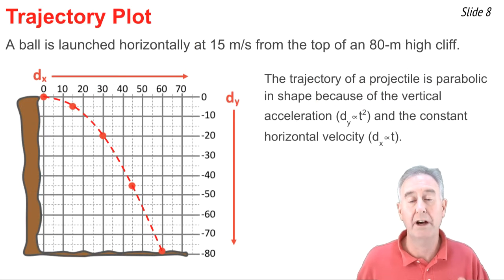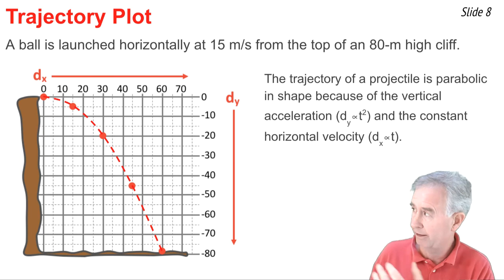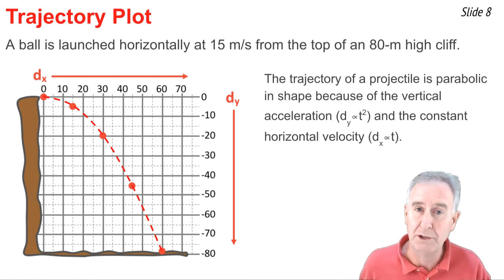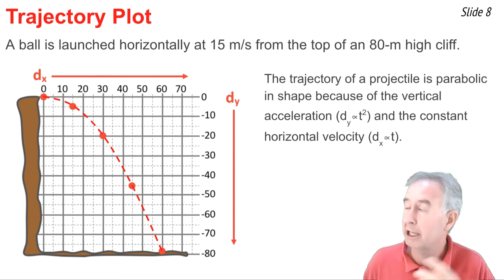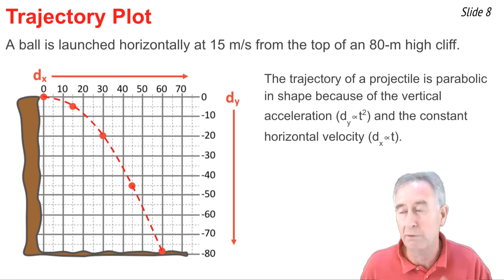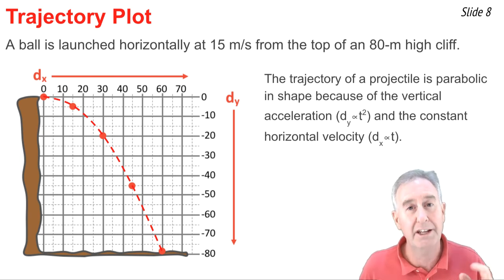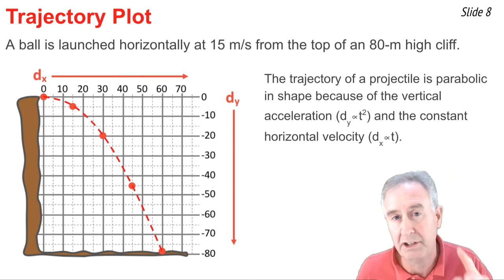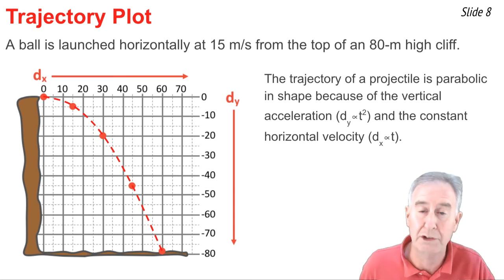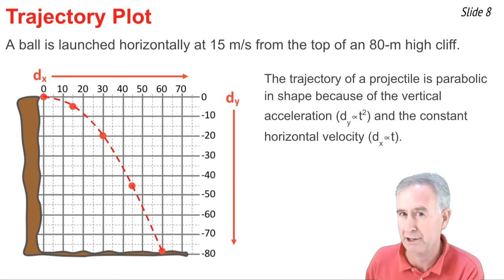The calculations we just performed of d_x and d_Y were for a ball launched horizontally at 15 m/s from the top of an 80 meter tall cliff. And now what we can do with these values is we can plot them on a trajectory plot like the one you see here. The ball starts at the top of the cliff at the origin 0, 0. And I can use d_x and d_Y and plot the locations of the ball at 1, 2, 3, and 4 seconds. And what strikes you right away is that the trajectory of a projectile is parabolic. And it's parabolic because horizontally the ball moves to cover a horizontal displacement that's proportional to time to the first power. And vertically it moves such that the vertical displacement is proportional to the time to the second power. And that yields us the familiar parabolic trajectory of a projectile.